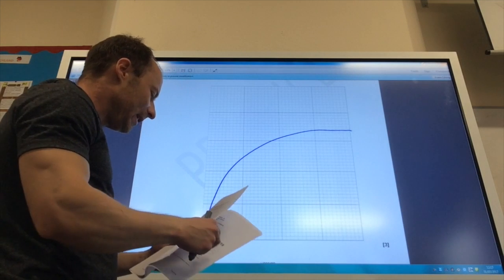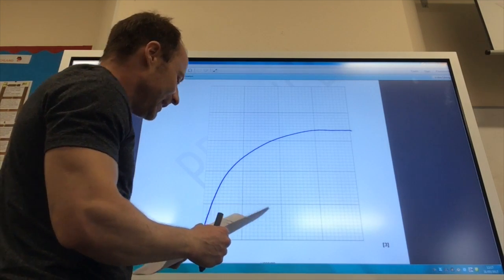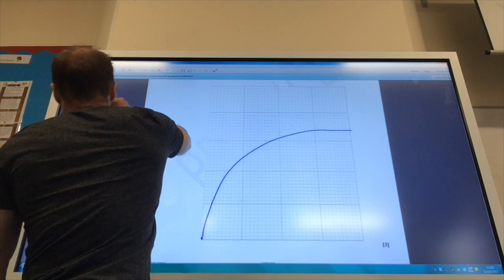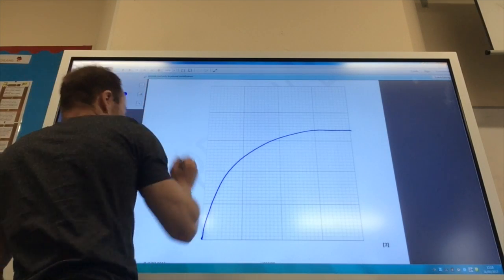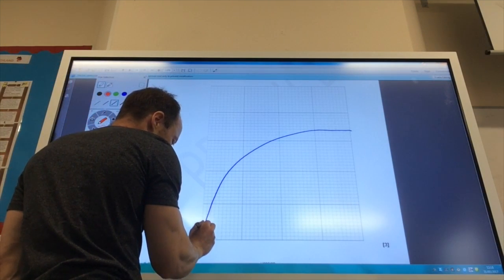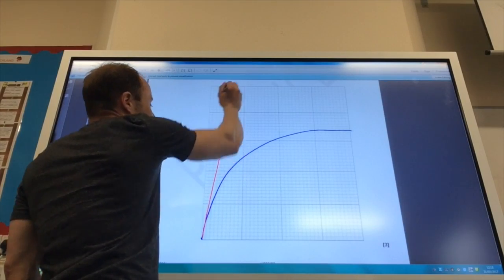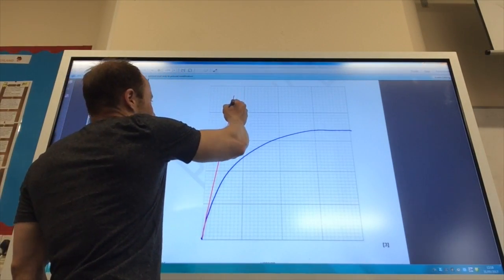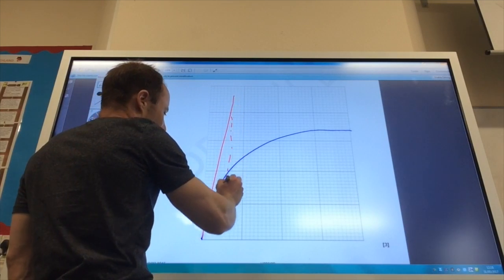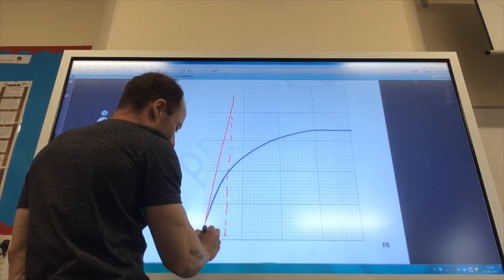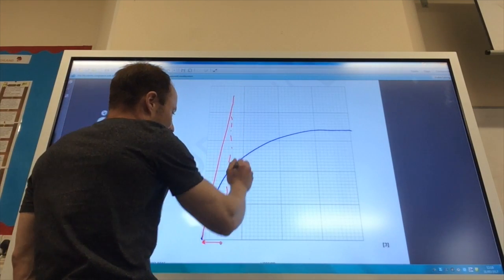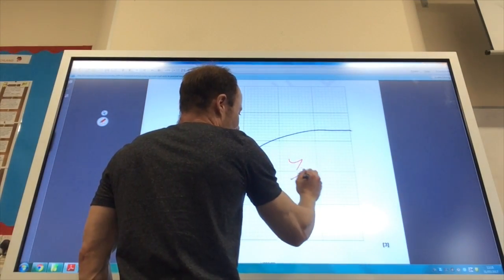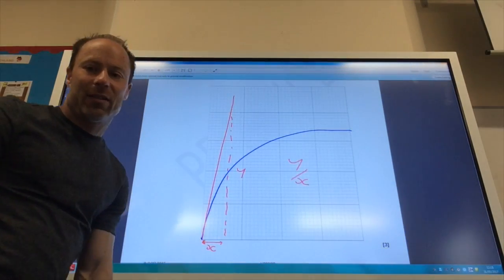Then it wants me to determine the initial rate. What you do is this is the initial rate here, so you get yourself a ruler, and you draw a tangent at time equals zero, like so, obviously you're going to use a ruler, and then you determine the gradient of that line, which, if that's y, that's x, the gradient is y divided by x, like so.